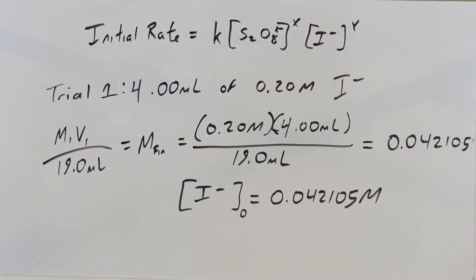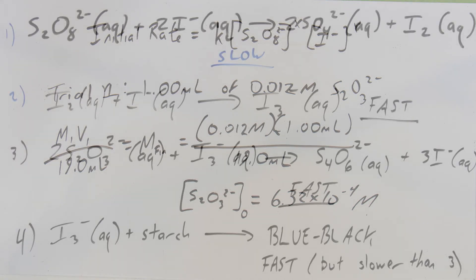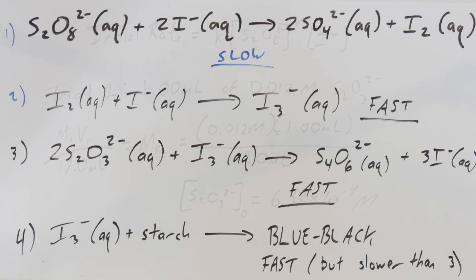We do the same for the iodide concentration — when diluted out to 19 mL for trial one, we get a concentration of roughly 0.042 molar. The critical one is the thiosulfate anion, which acts as part of our indicator system. We don't change the amount of thiosulfate in any trial, so this is the controlling number for our initial rates. Its concentration at the start of the reaction in the flask, after adding everything, is 6.32 × 10⁻⁴ molar.